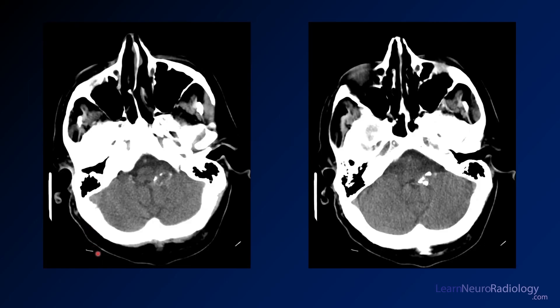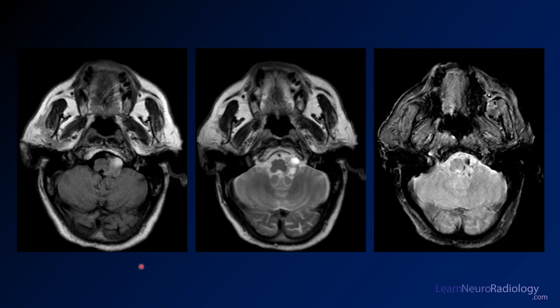Here we see some images from a CT through the posterior fossa — hopefully you can key in on a little bit of asymmetry. Now we have some images from the patient's MRI: FLAIR, T2, and gradient. Hopefully you can now hone in on that abnormality, figure out where it is, think about what space it's located in, and what kind of lesions occur in that space.